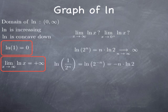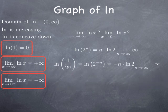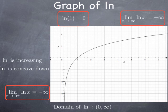Similarly, for the behavior near 0 for positive x, we look at ln(1/2^n) = ln(2^(−n)) = −n·ln(2). Since ln(2) is positive and n grows without bounds, this goes to negative infinity. And as n grows, 1/2^n approaches 0 from the right. Therefore, the limit at 0 from the right of ln(x) is negative infinity. So the graph is an increasing, concave-down function with a vertical asymptote at x = 0, going to infinity as x goes to infinity, and passing through the point (1, 0).